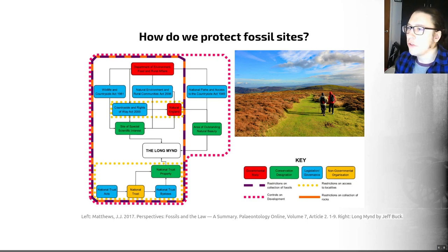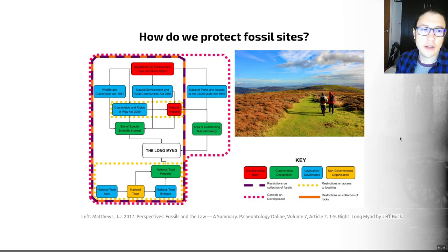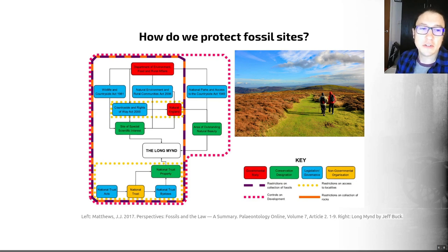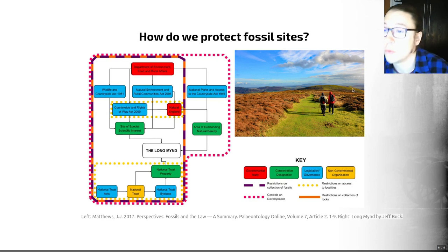For example, the Countryside and Rights of Way Act 2000 places sites of international and national importance into the realm of national heritage. The main designation for geoconservation in England is a Site of Special Scientific Interest (SSSI): land with SSSI status is still owned by whoever owned it before designation, but there are restrictions on building and development. As the diagram shows, a large number of different interacting designations and organizations are required to look after a piece of geoheritage, meaning important sites do have legal protection but it is not always as well enforced as we would like.